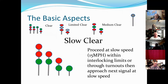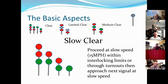A slow clear: we move the green signal down to the bottom head. That simply means we can go through the interlock. It's on the bottom two heads, so it means we're going at a restrictive speed and we're going through an interlocking plant or at least a turnout. It means we can go at the slow speed of 15 miles per hour.